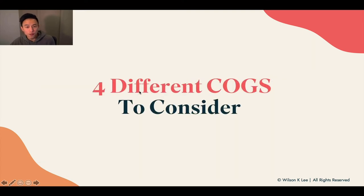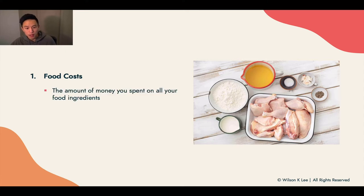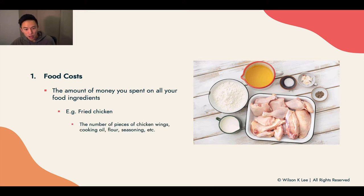Now, the four different cost of goods sold components to consider. First up: food cost — the amount of money you spend on your food ingredients. For example, if what we're planning to sell is a fried chicken combo, the number of pieces of chicken wings, the cooking oil, the flour, the seasoning, et cetera — all of these would be the food cost and cost of goods sold.